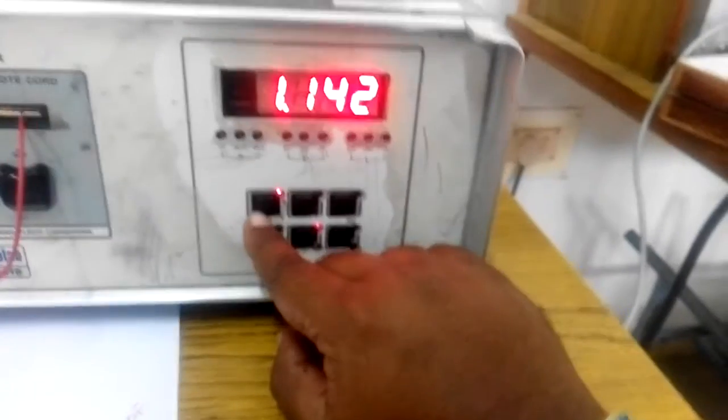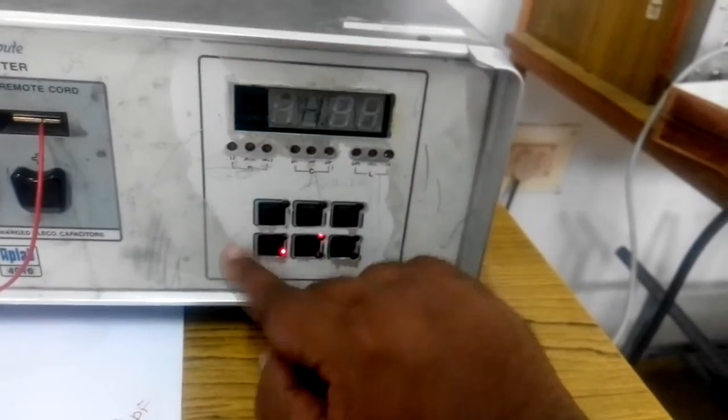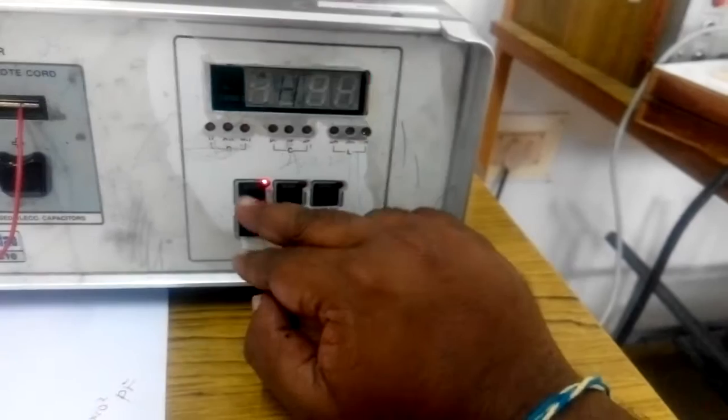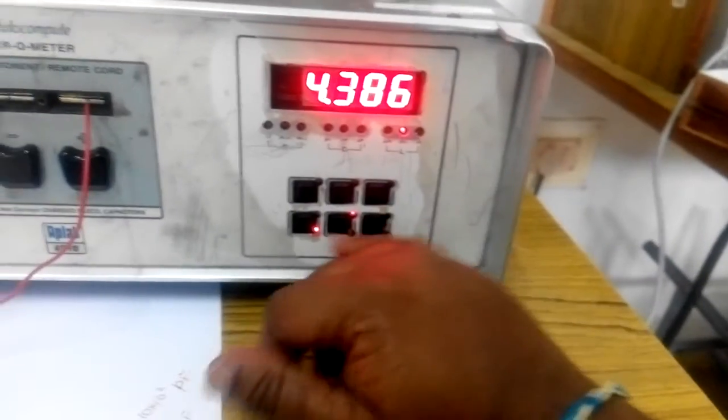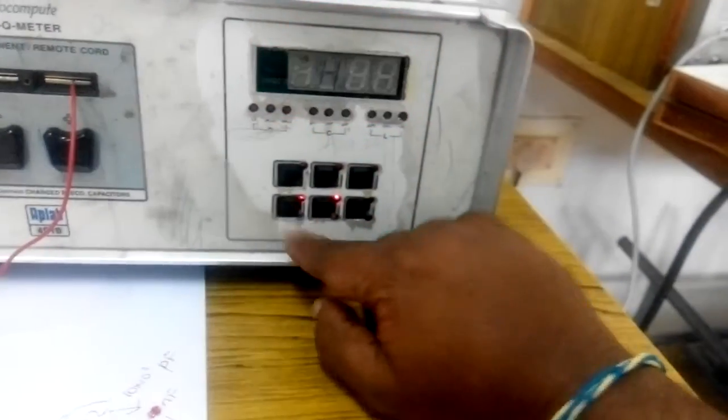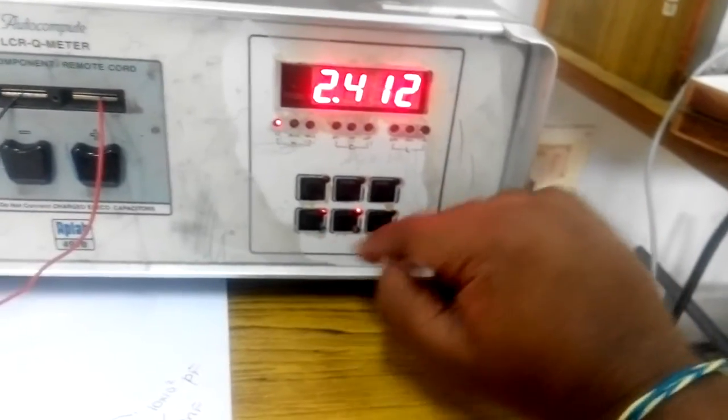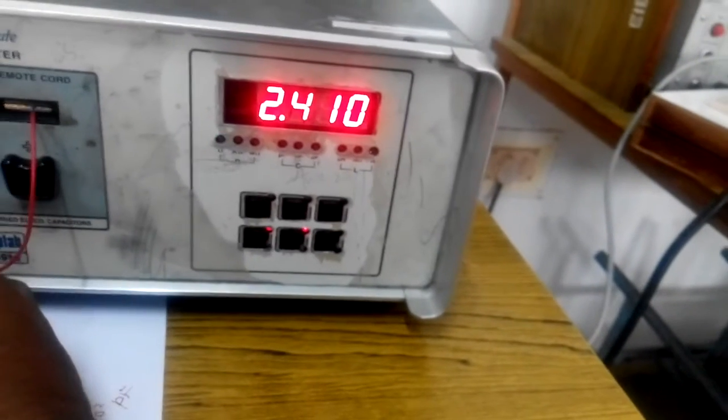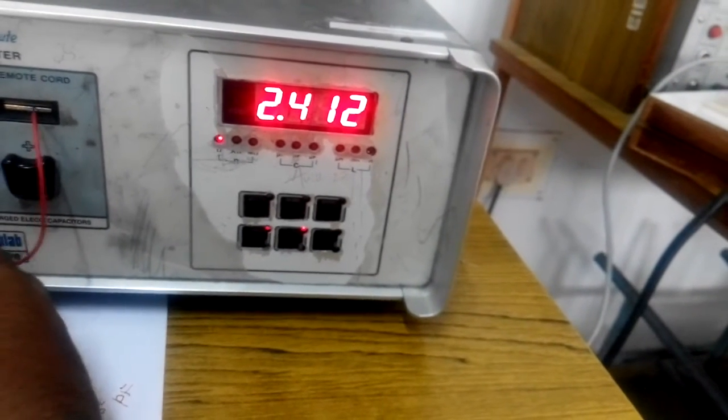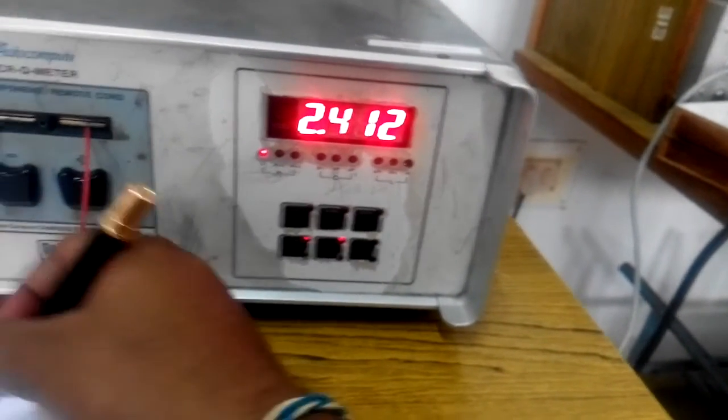So for that, bring back this switch position to the resistance mode. I have kept the switch in the resistance mode. The measured value of resistance is 2.142 ohms.